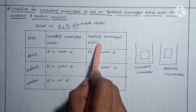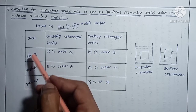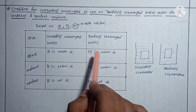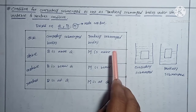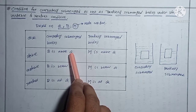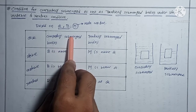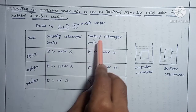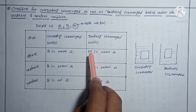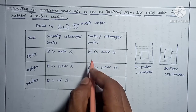So for completely submerged bodies we conclude the condition based on center of buoyancy and center of gravity. For partially submerged bodies we conclude based on metacenter and center of gravity. Center of gravity is common in both cases — for completely submerged we use center of buoyancy B, and for partially submerged we use metacenter M.